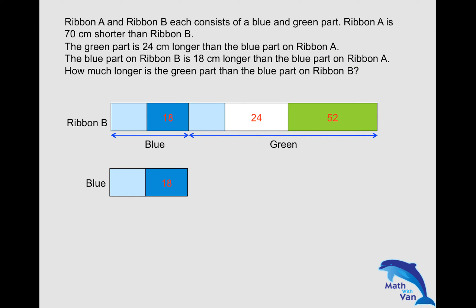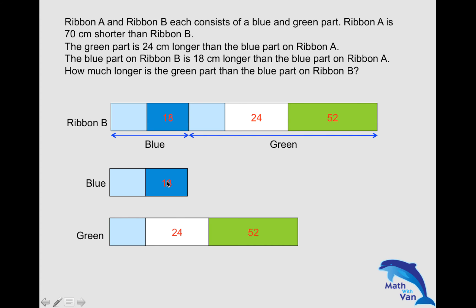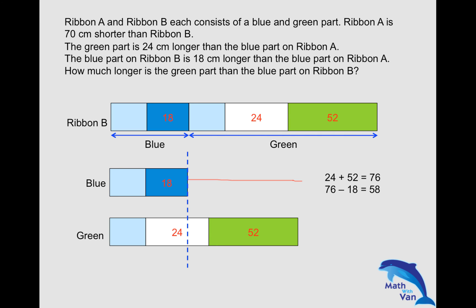Let's take a look. This is the blue portion, and this is how the green portion of Ribbon B would look like. We have the values: 18, 24, and 52. What we don't have are the two lighter-tone blue values, but it doesn't matter — the question is only asking for the difference between the green and the blue. So the number sentence: you just need to take 24 plus 52 and then take away 18. This is also the concept of constant difference, which you will learn as you go up to P5 and P6. The answer is 58.